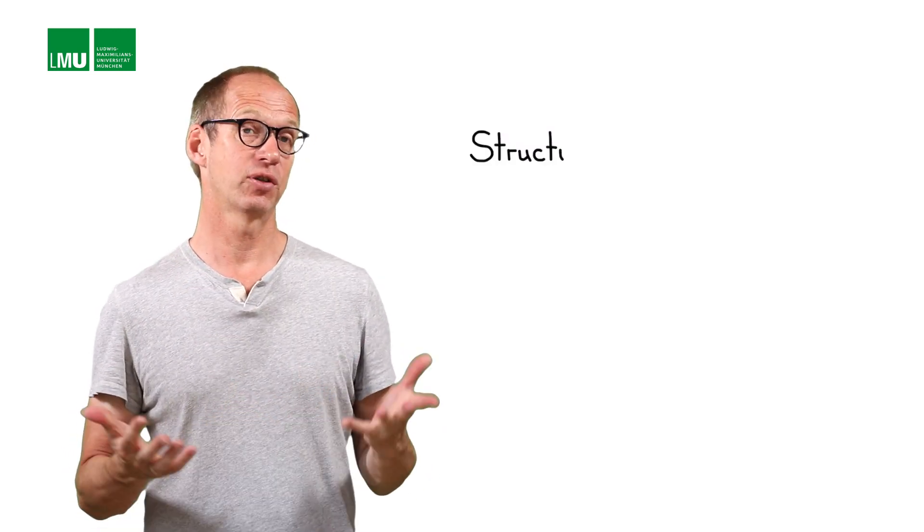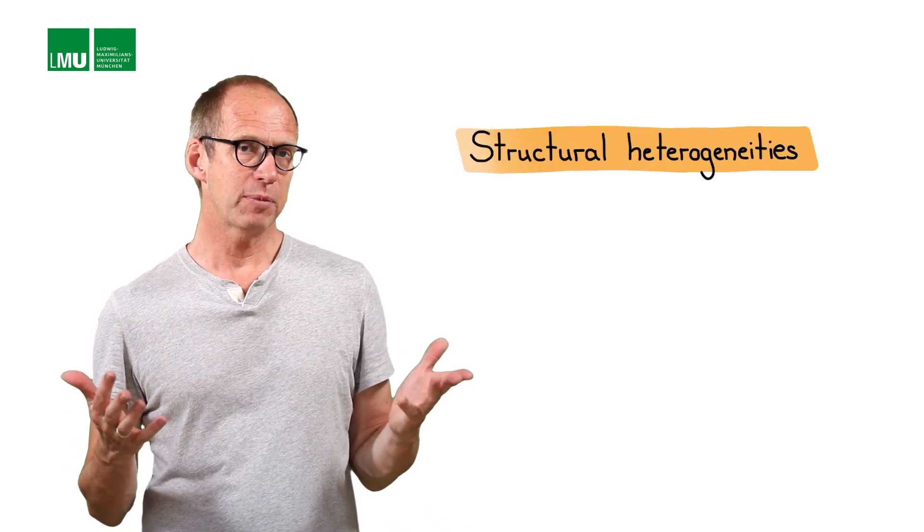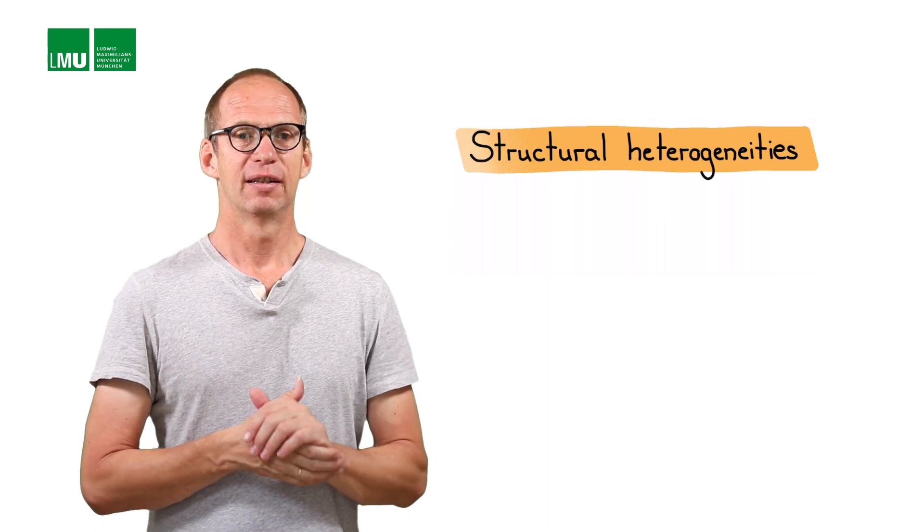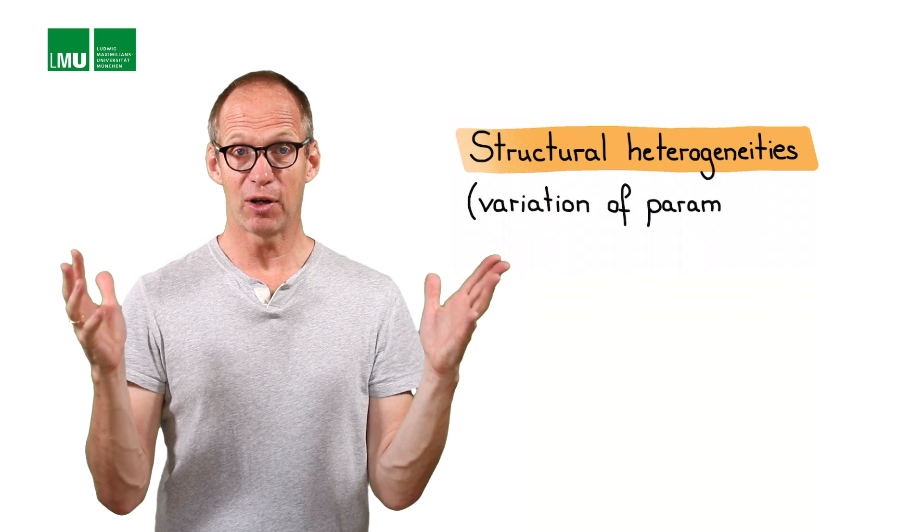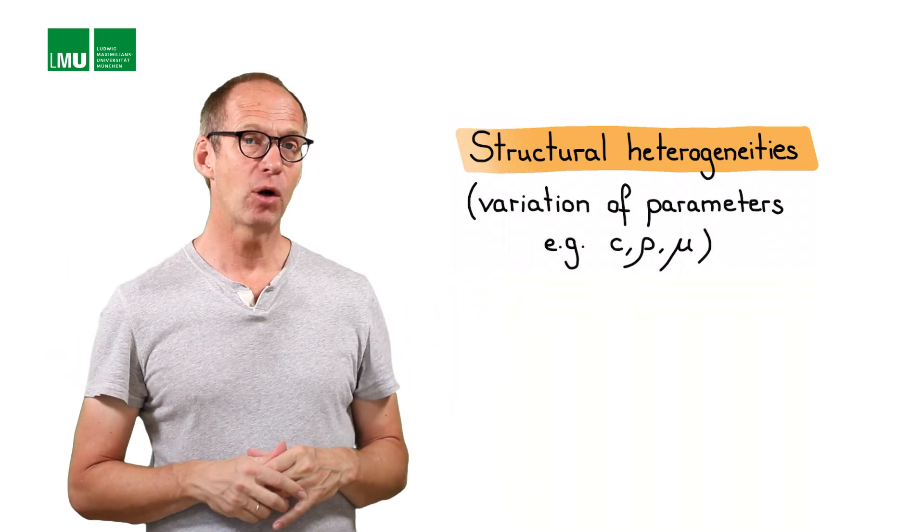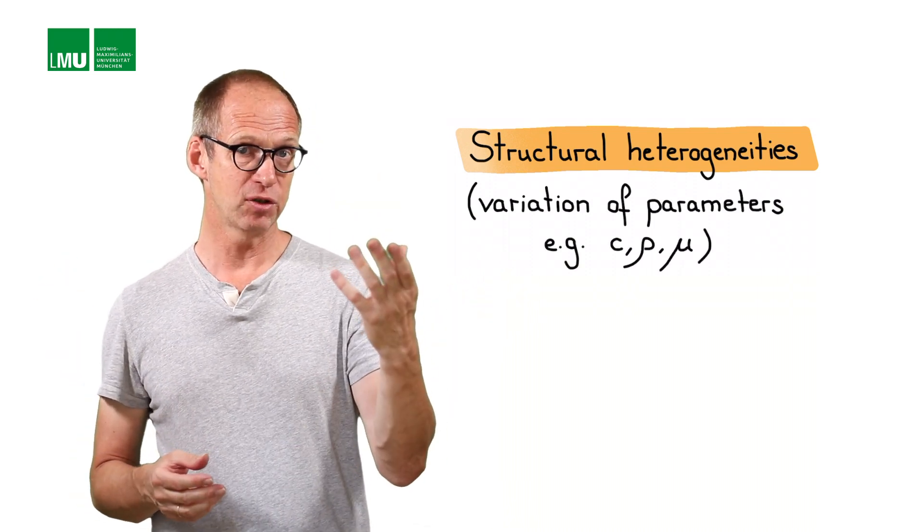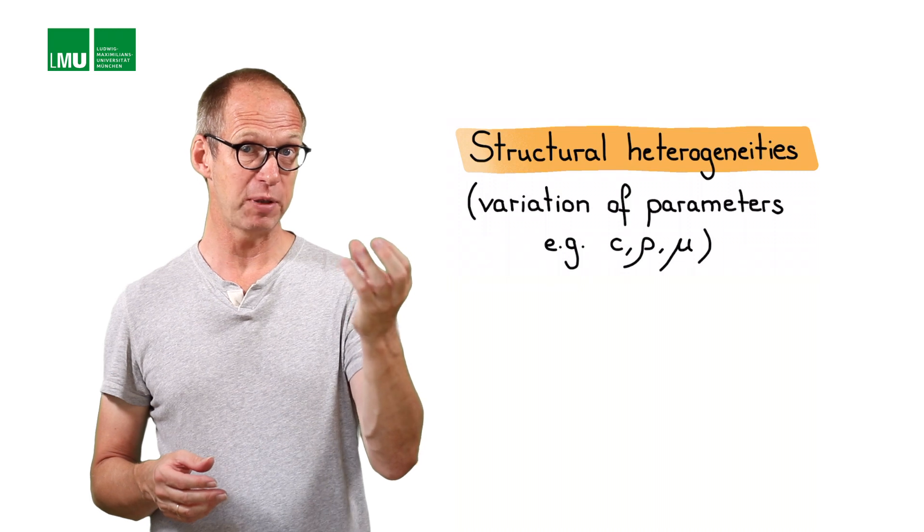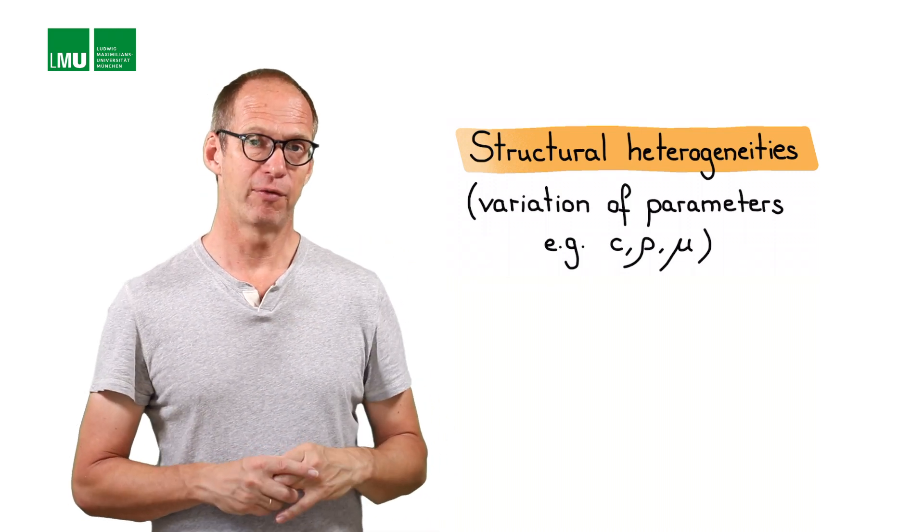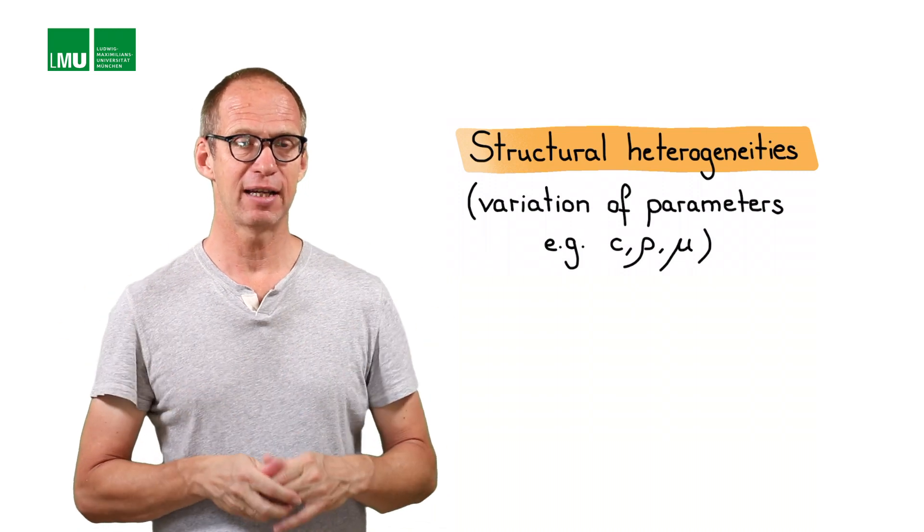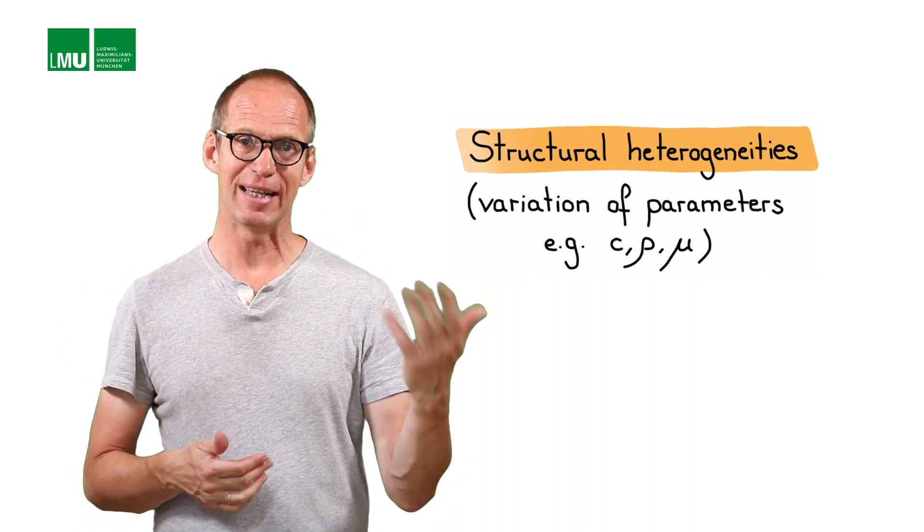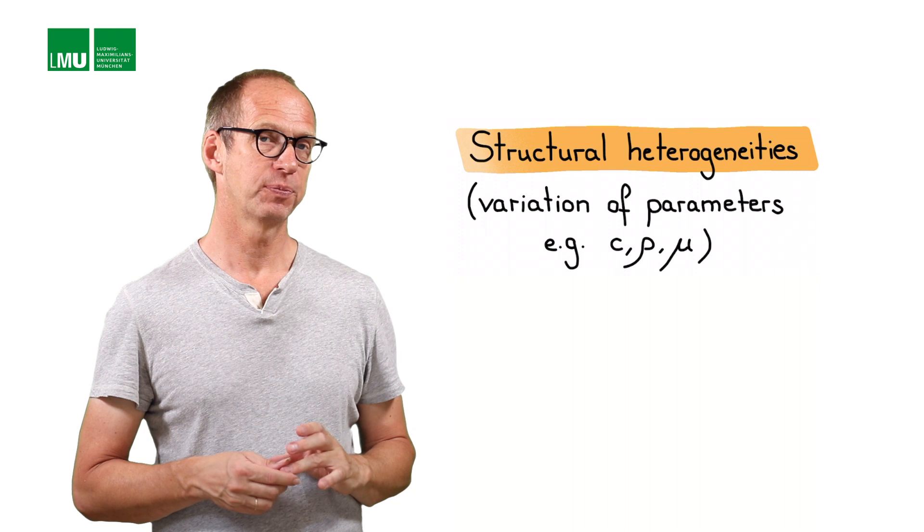Let's talk a little more about structural heterogeneities. What I mean by that is basically the variation of the parameters of the partial differential equation. In our case, this can be the acoustic velocity, basically the speed of the waves as a function of space, or it could be, in the elastic case, the distribution of density and the shear modulus.